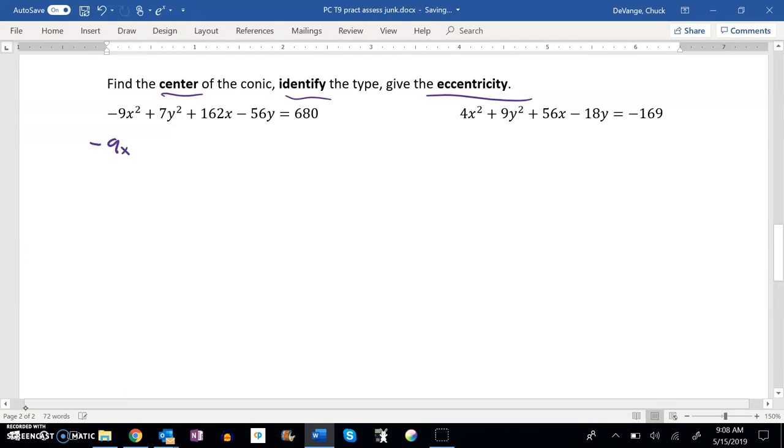I'm going to get the x's all together. So negative 9x squared minus 162x plus 7y squared minus 56y equals 680. So far, so good.